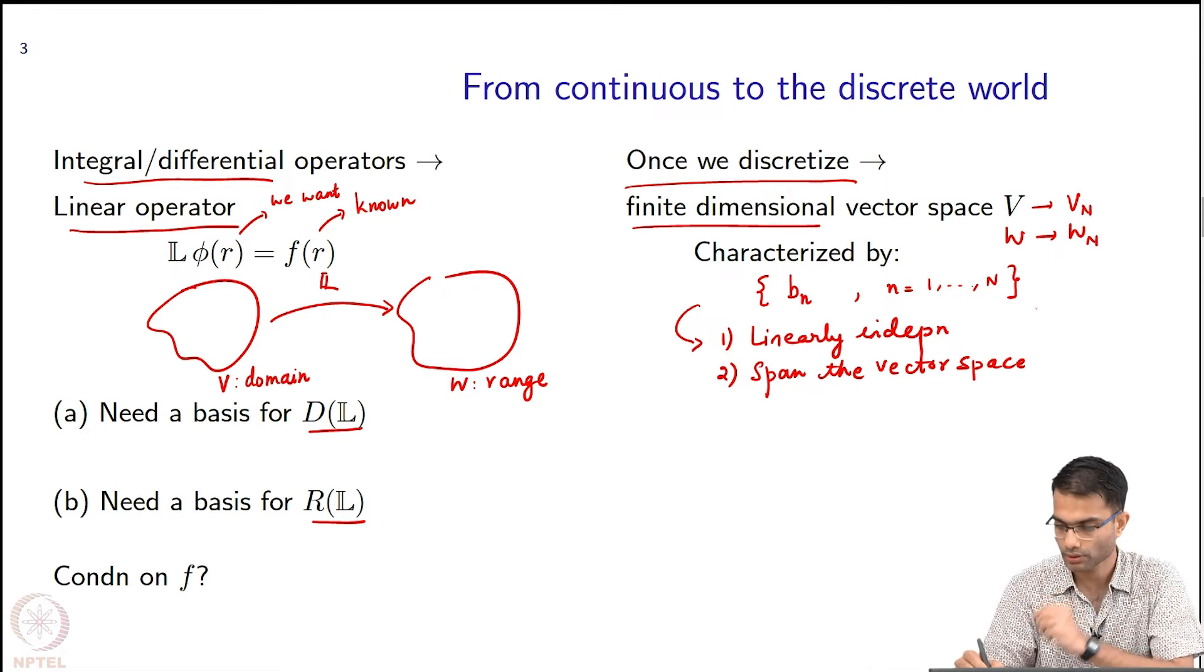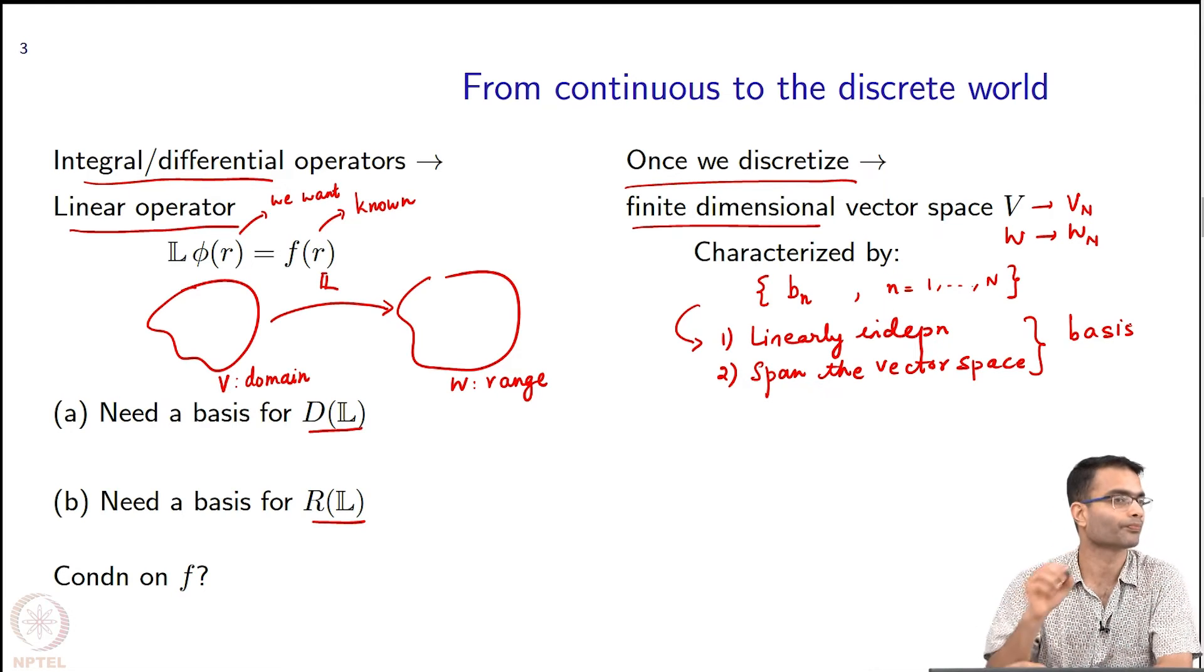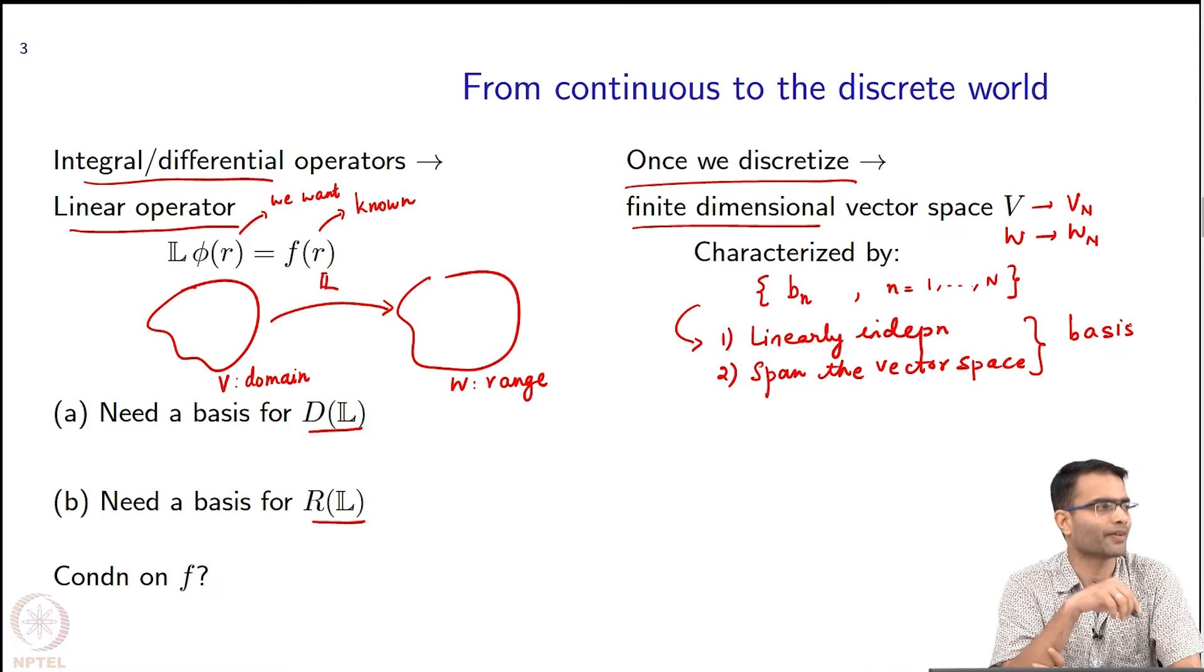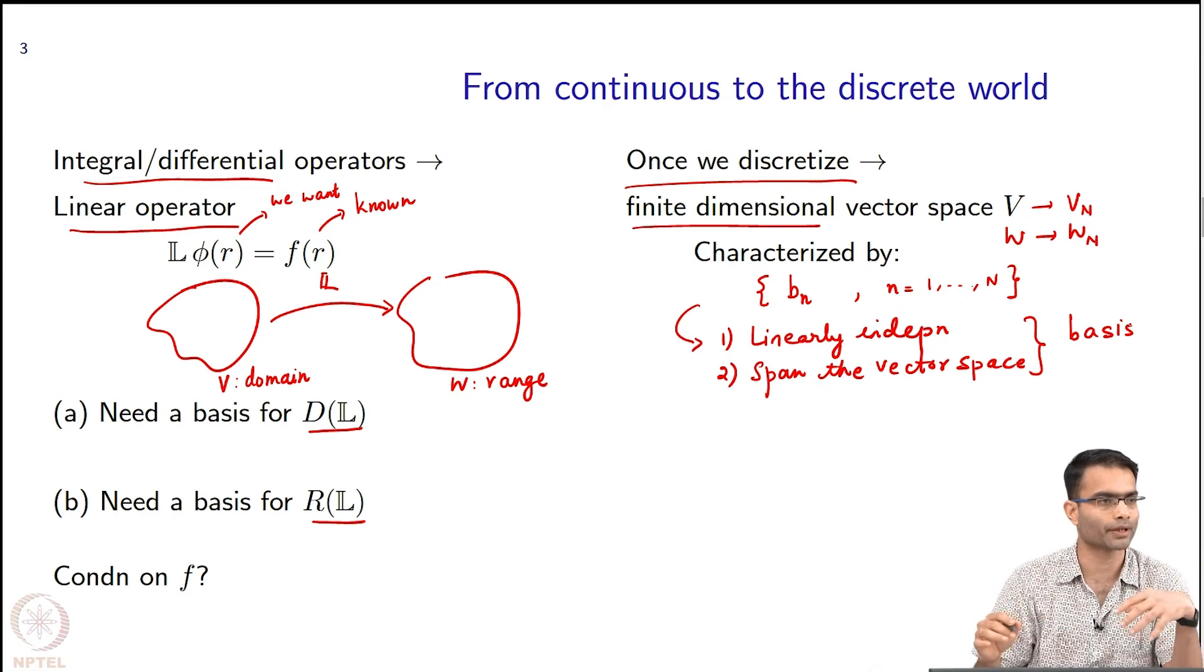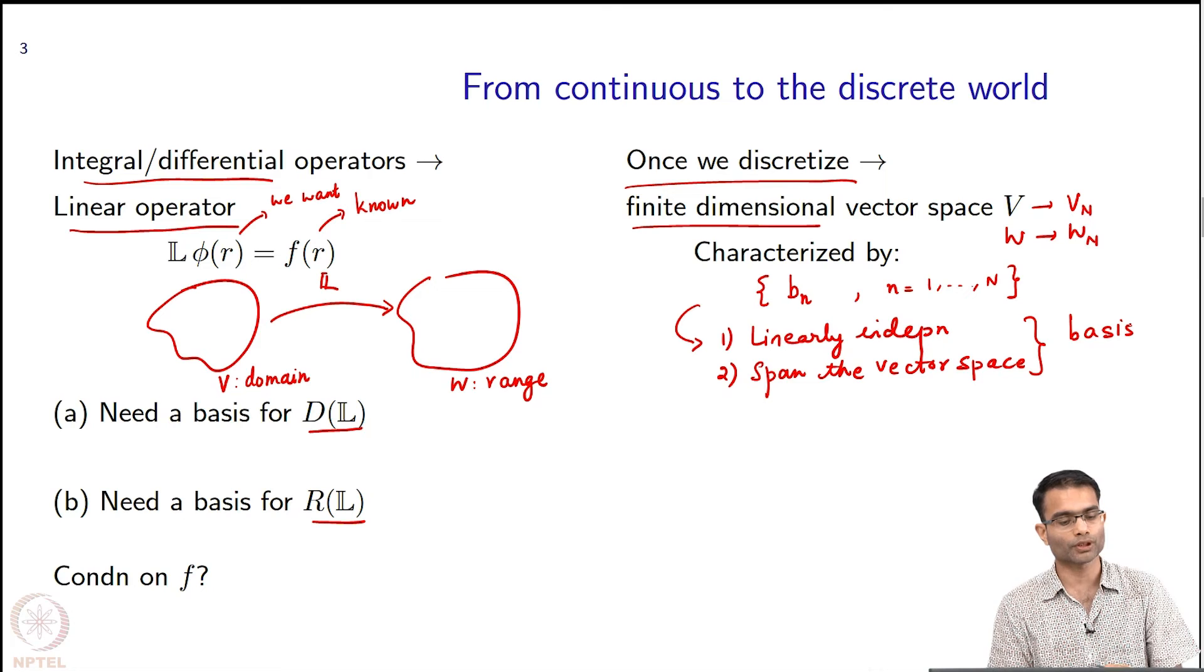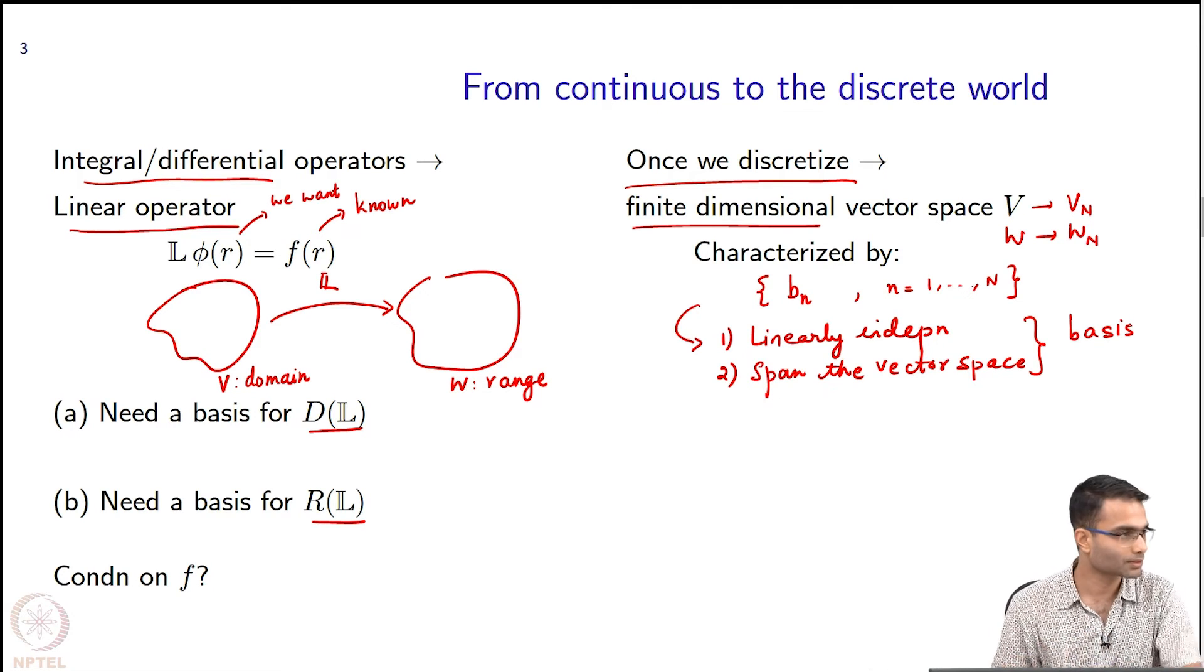So these are the two requirements to be called a basis. Fairly simple stuff now. I mean we already sort of know this, but we are just formally putting it into the language of math. So therefore, for the domain I need a basis, and for the range also I need a set of basis.